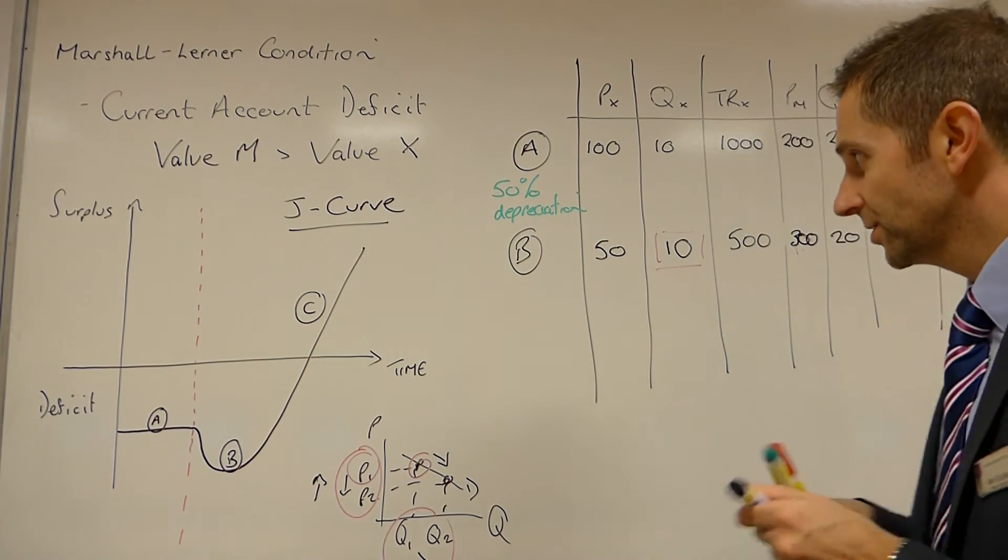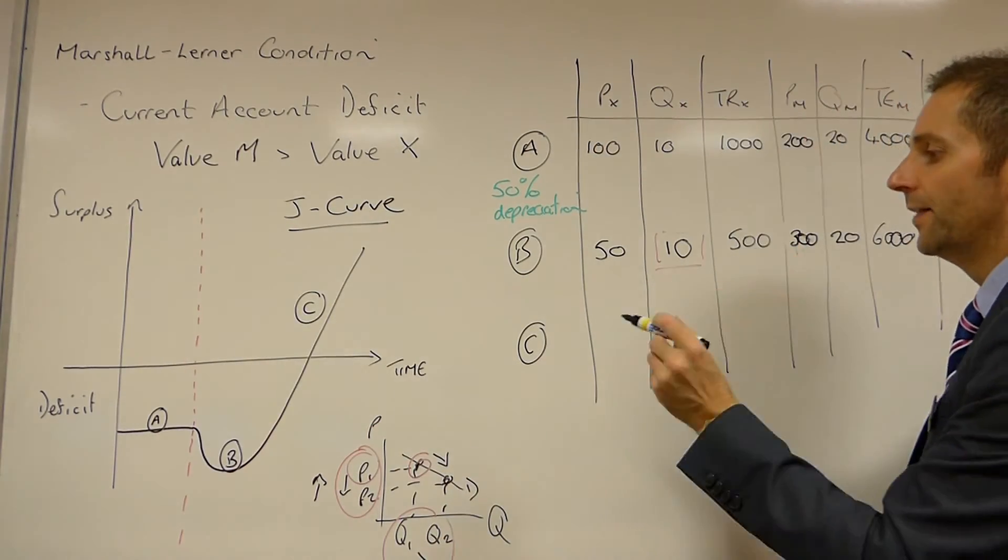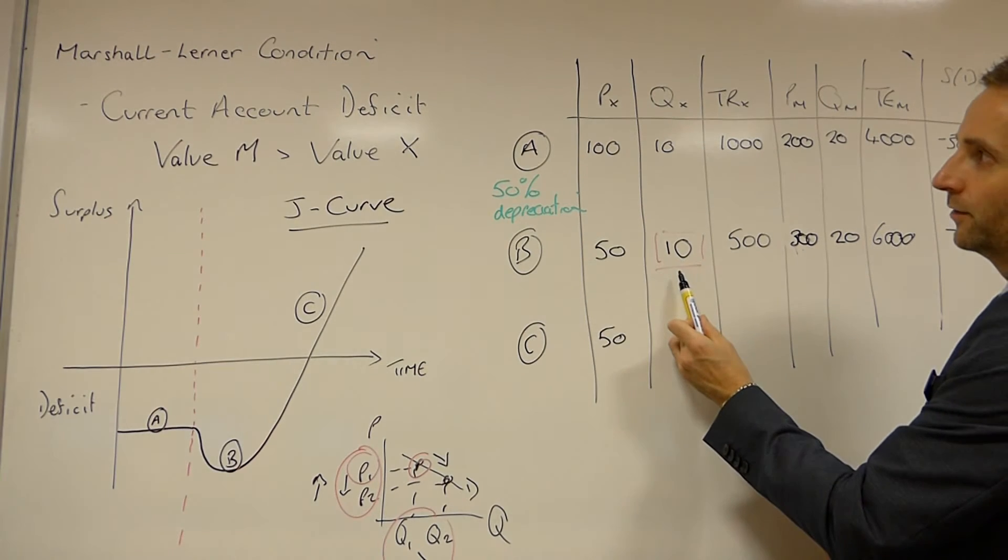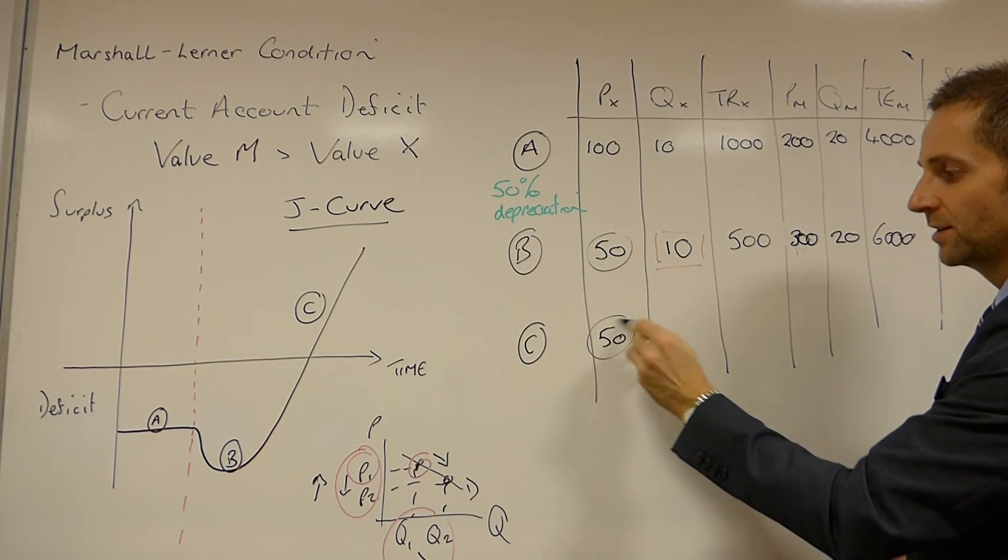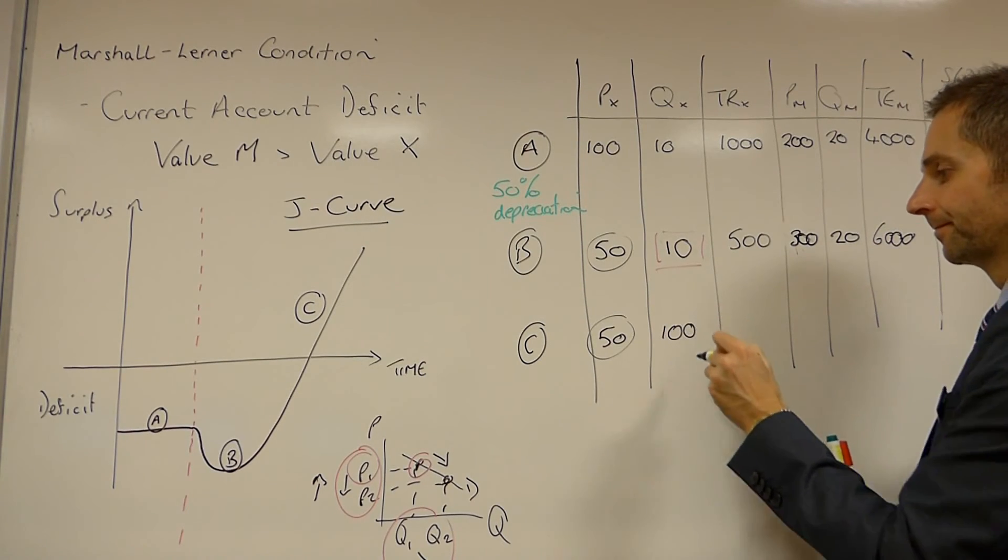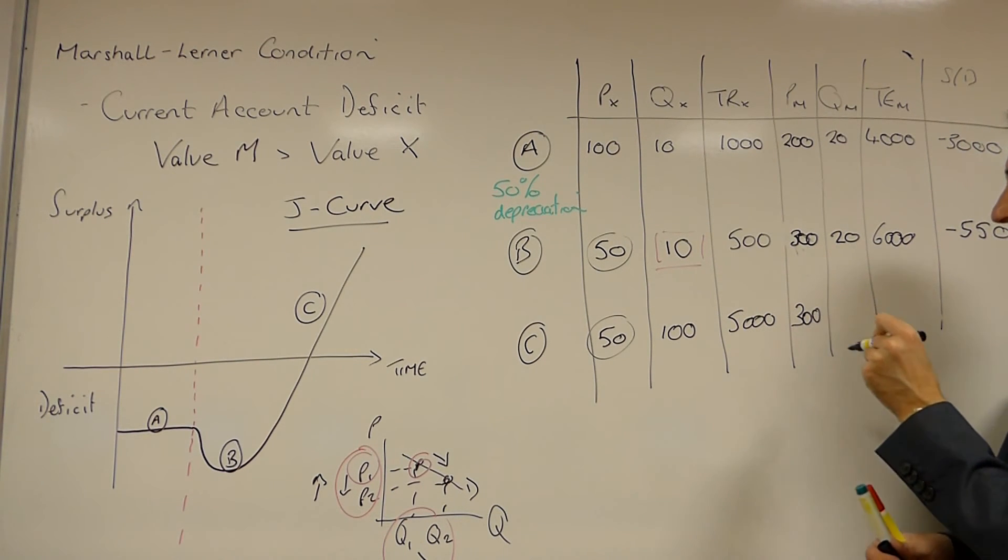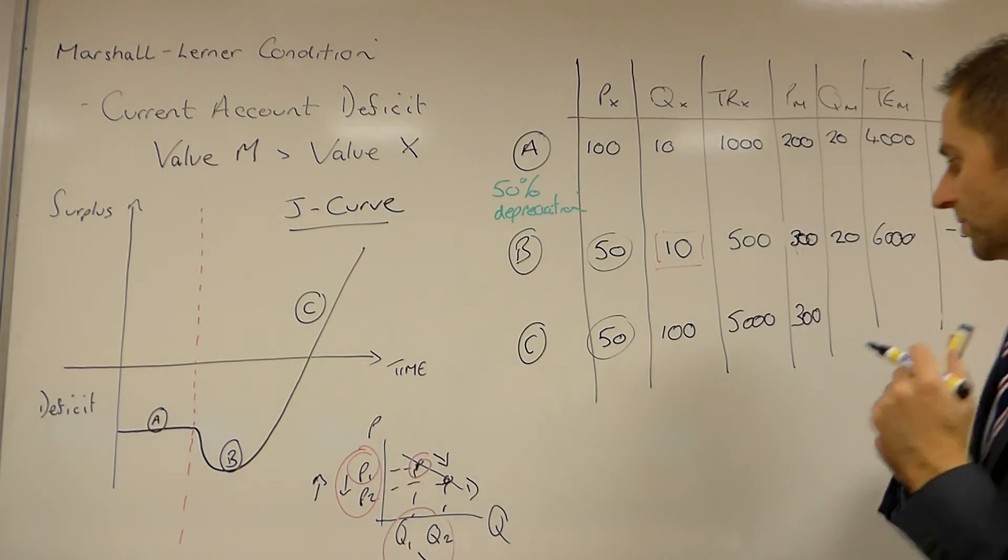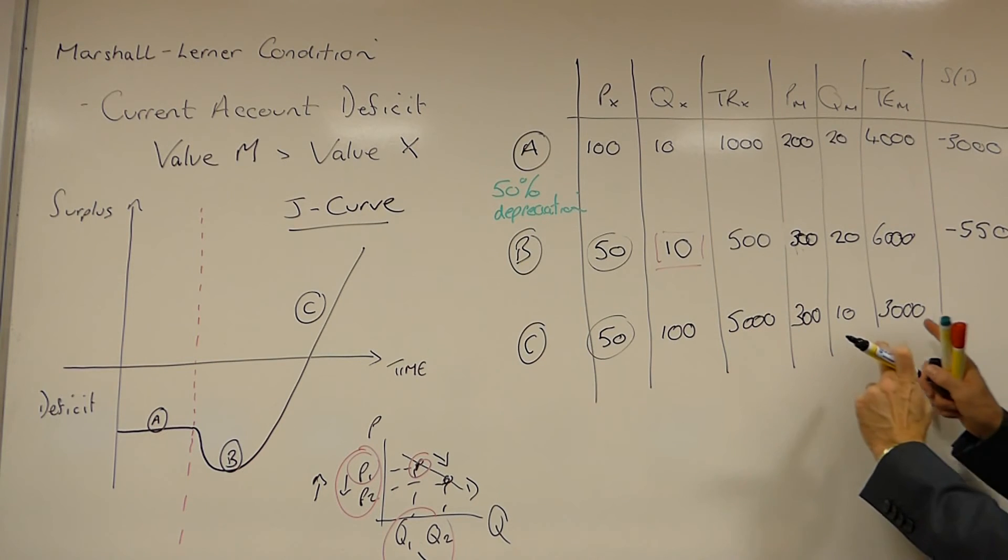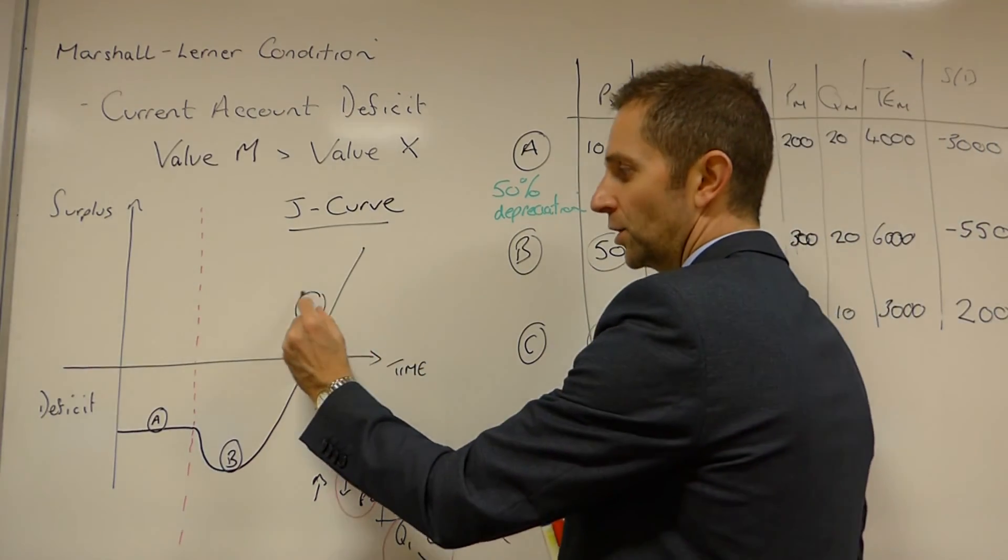However, it's not all bad news, ladies and gents, because after a certain period of time, the contracts run out, people realise the prices have changed, and then the country can begin to reap the rewards. So £50 for the export price, remaining at £50 because of the depreciation. Now this 10, let's say that this shoots up, so it might shoot up to £100. So now you've got £5,000 coming into the economy. The £300 for your import price remains at £300, but now we can have some adjustment in quantities. So now this might only be £10. And so you've got £3,000 leaking out of the economy. But obviously you're £5,000 in, £3,000 out, and so now you've got a surplus of £2,000. And so hence we end up with a surplus at point C.